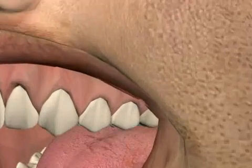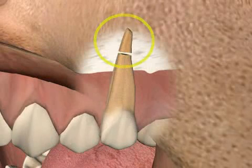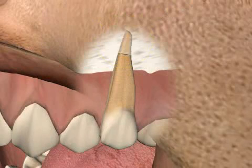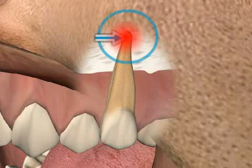Root tip removal refers to the surgical removal of the root tip from the tooth root. Chronic inflammation of the root tip will eventually unfortunately necessitate surgery. Let's take a moment to investigate how this chronic bone inflammation happens.